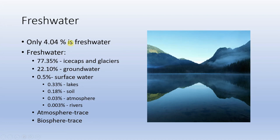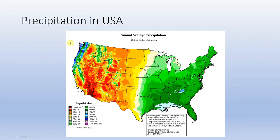A US precipitation map shows the east is green with lots of precipitation — abundant surface water and groundwater, a humid climate. Out west is very arid except along the coastline. Olympic National Park in Washington state is the only northern temperate rainforest in the world. The western interior is so dry because of series after series of rain shadow effects produced by successive mountain ranges — by the time you get inland, there's very little precipitation left.